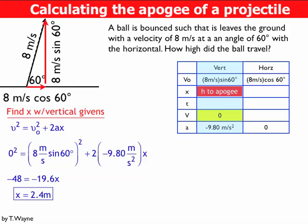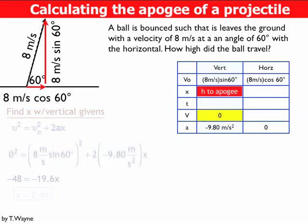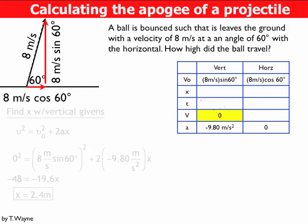But I can find more than that. Let's pretend that instead of finding the height to apogee, the question asks how much time did it take for the ball to reach its highest point? In other words, what was the time to apogee? So to find this, I'm going to ignore the x and focus on the t, using my same givens. And this time again, I'm going to make the final vertical velocity 0 just for this part of the question.